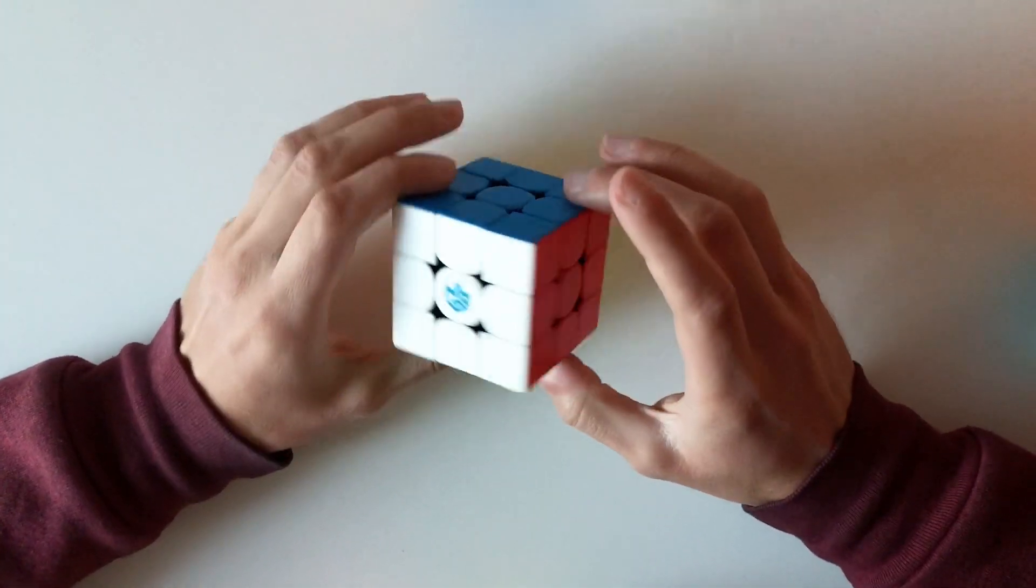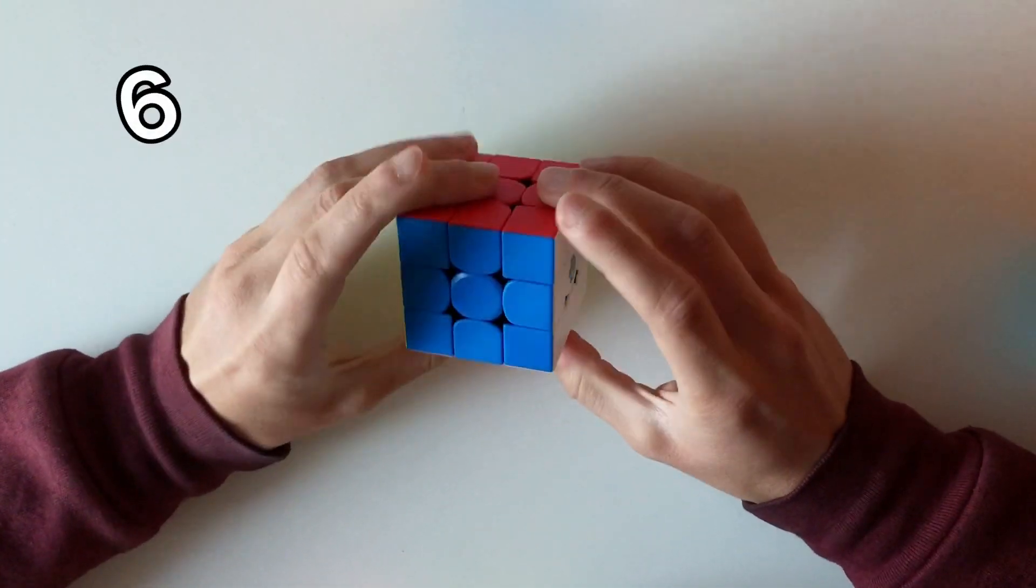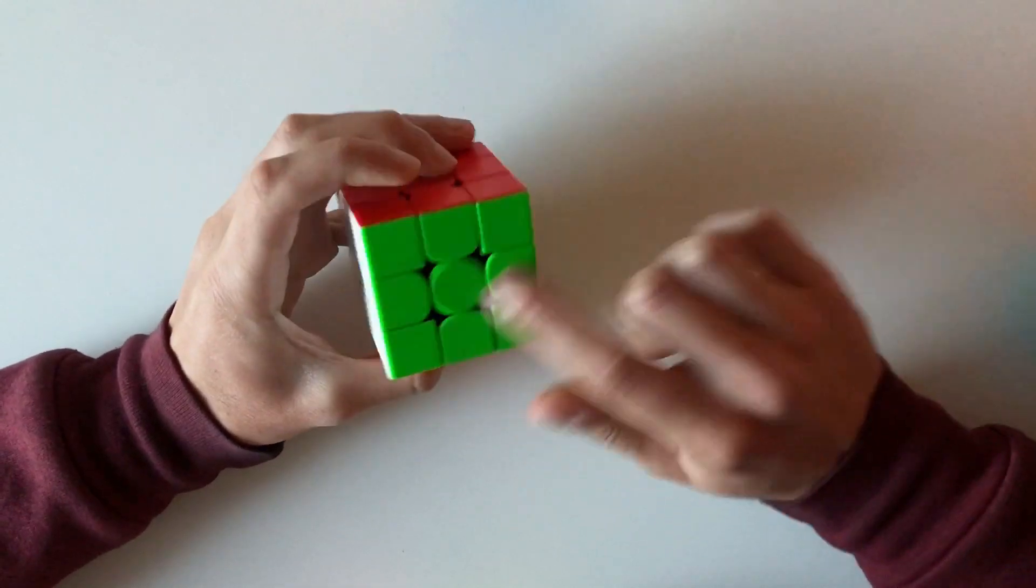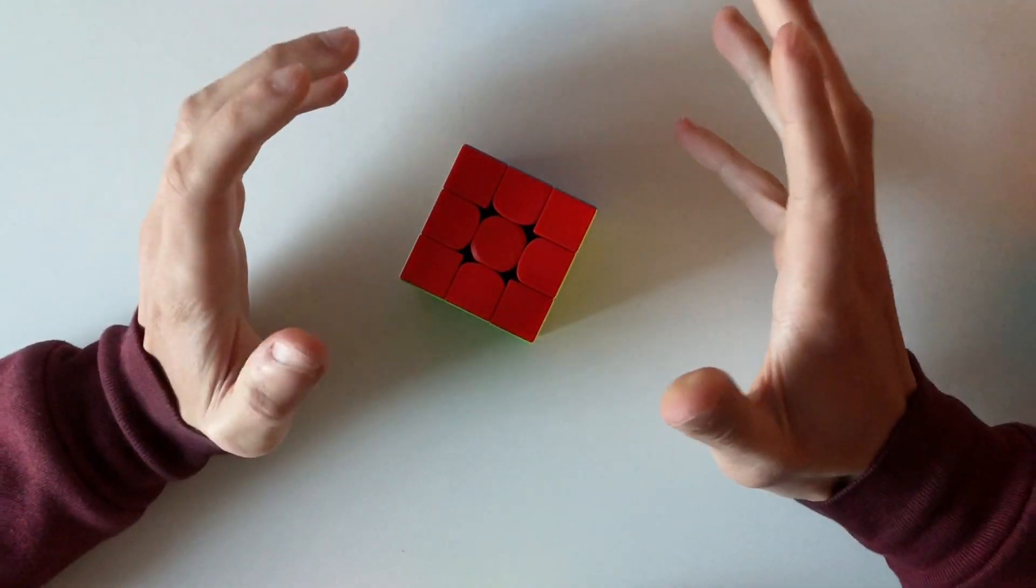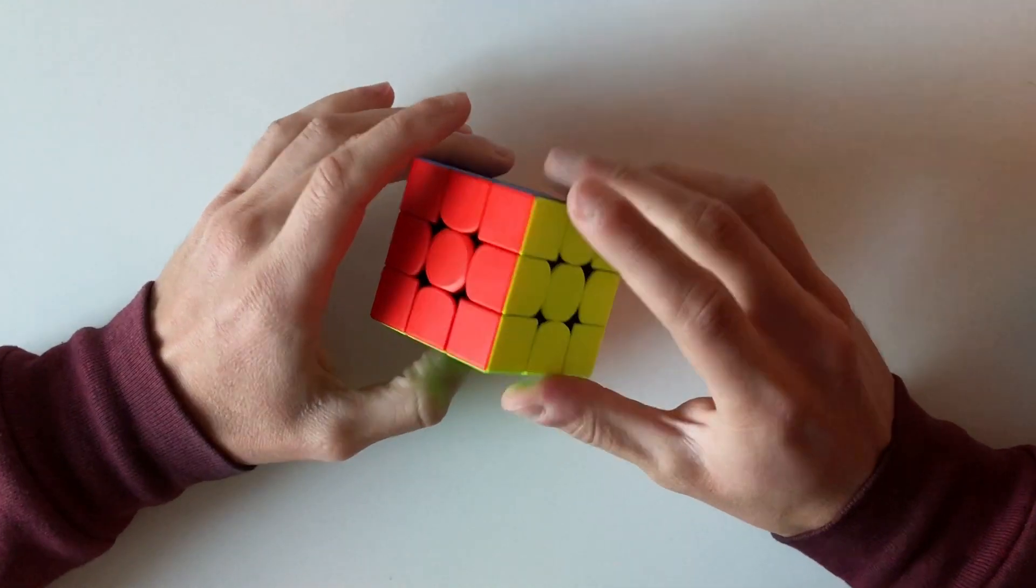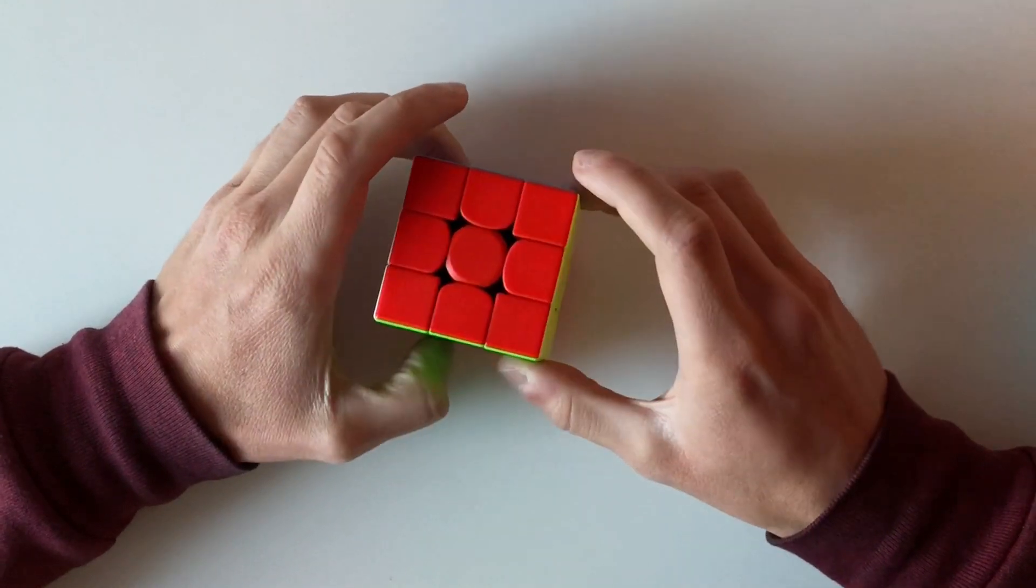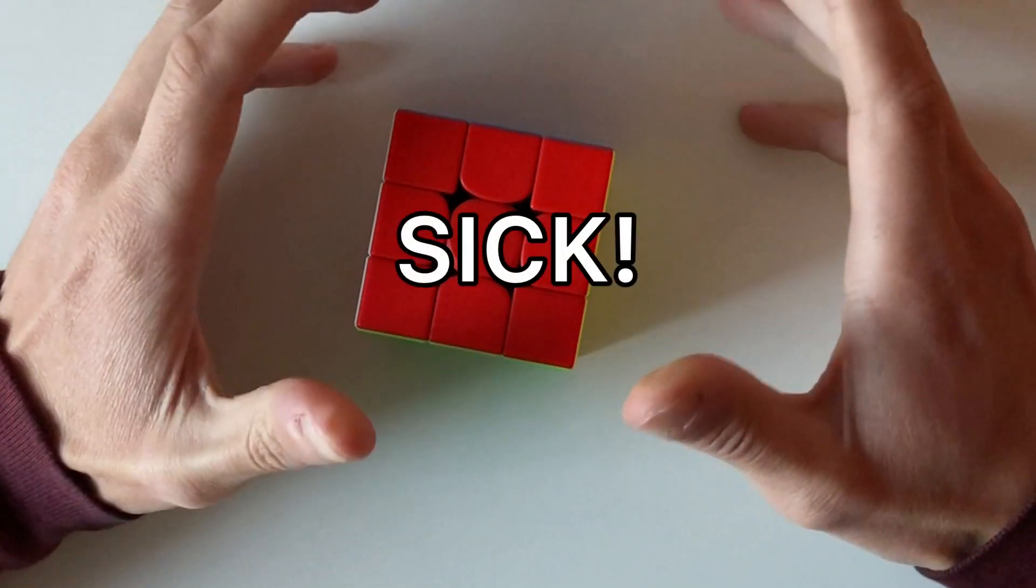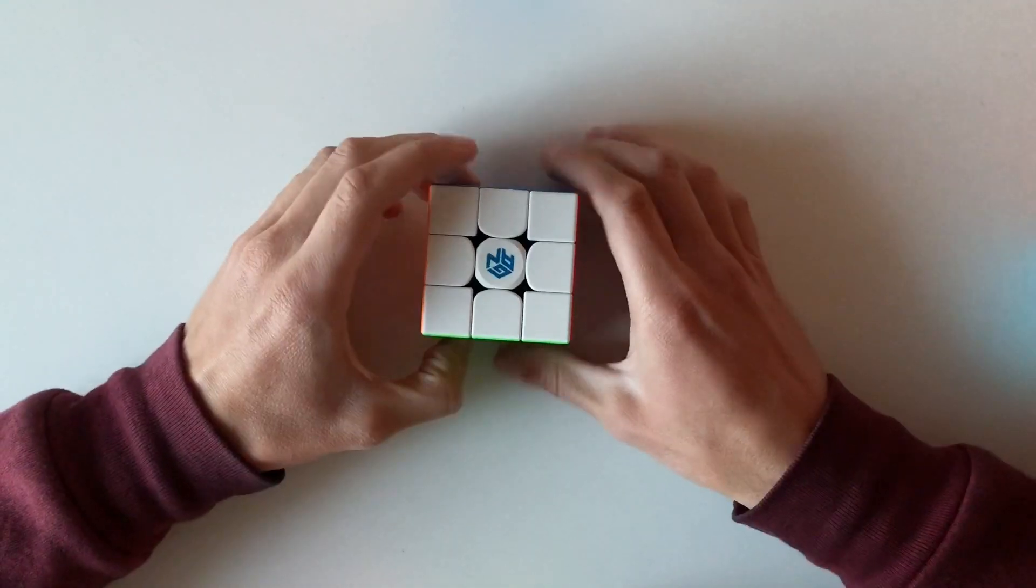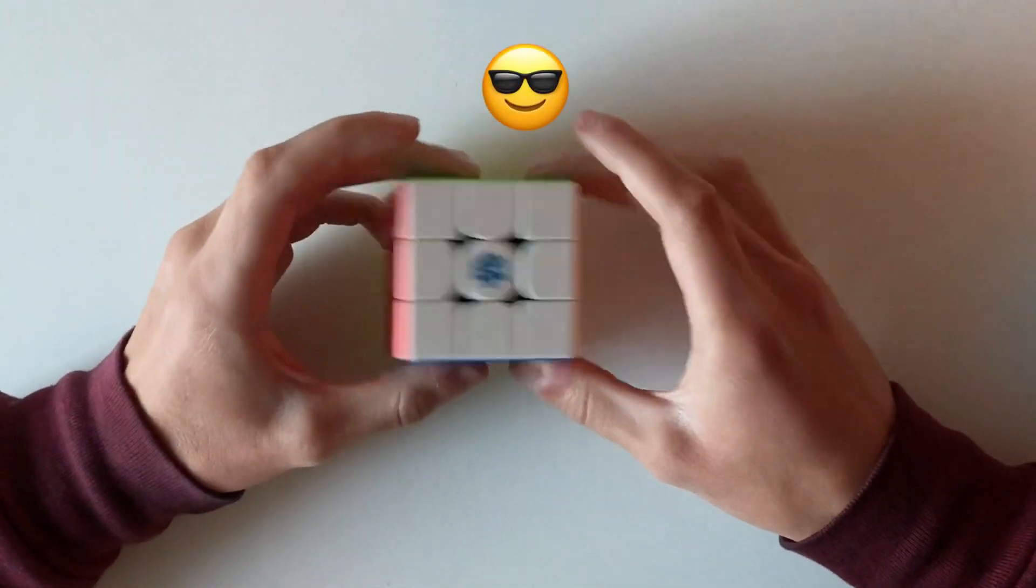Now we need a name for this method. It's six crosses to start and then the corners. So I can call it six cross corners, six CC, 6CC, sick. Yeah, that's it, that's the sick method. How sick is that name?